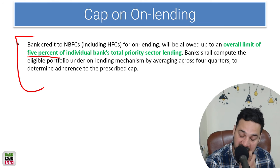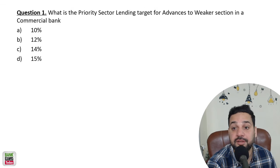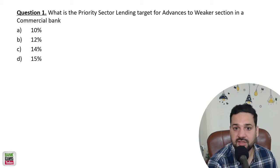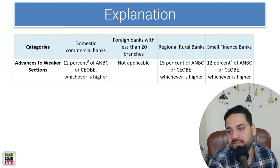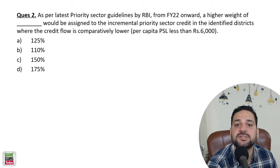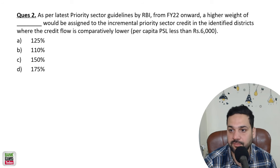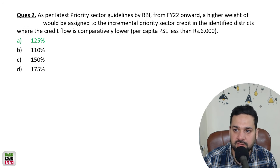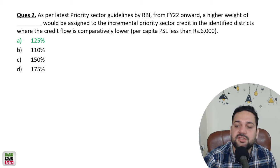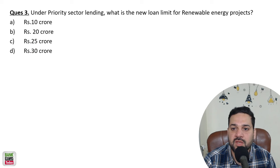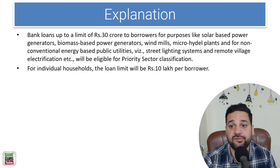Review: the priority sector lending target for advances to weaker sections is 12% for commercial banks, 15% for RRBs, and 12% for small finance banks. As per RBI guidelines, a higher weightage of 125% is given to low per capita PSL districts where per capita credit is less than 6,000 rupees. The new limit for renewable energy projects is 30 crore rupees.